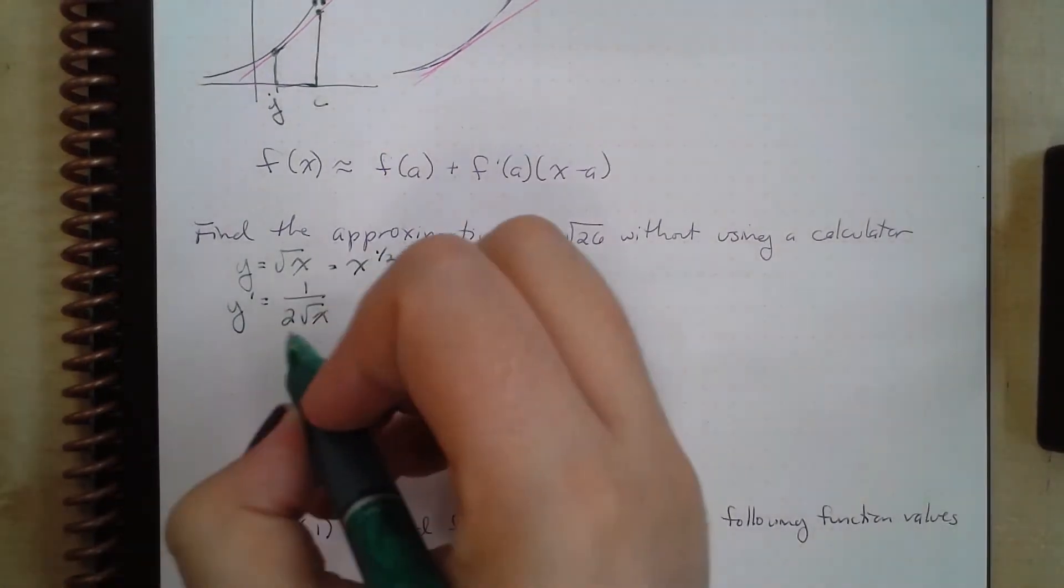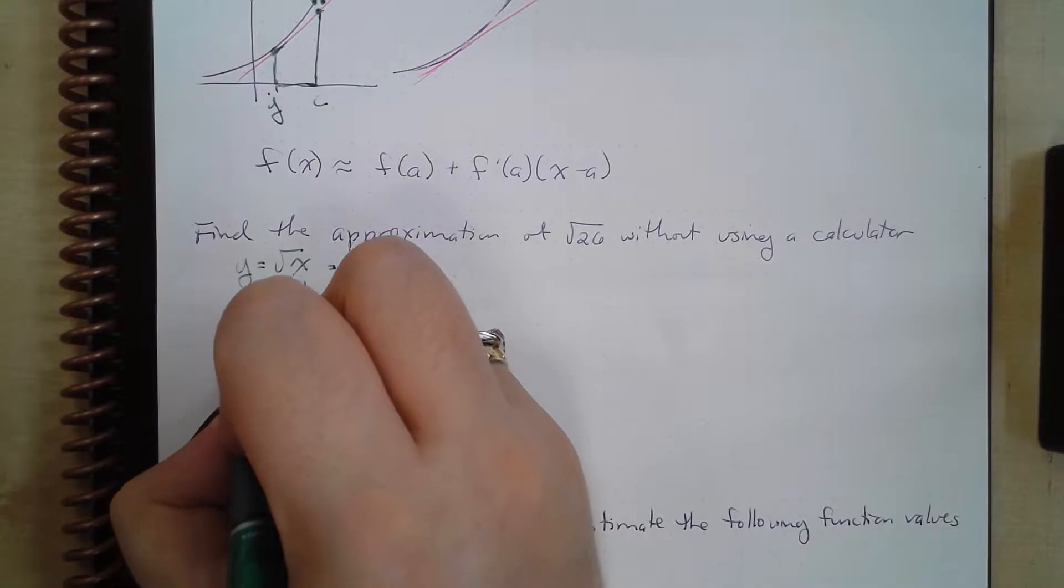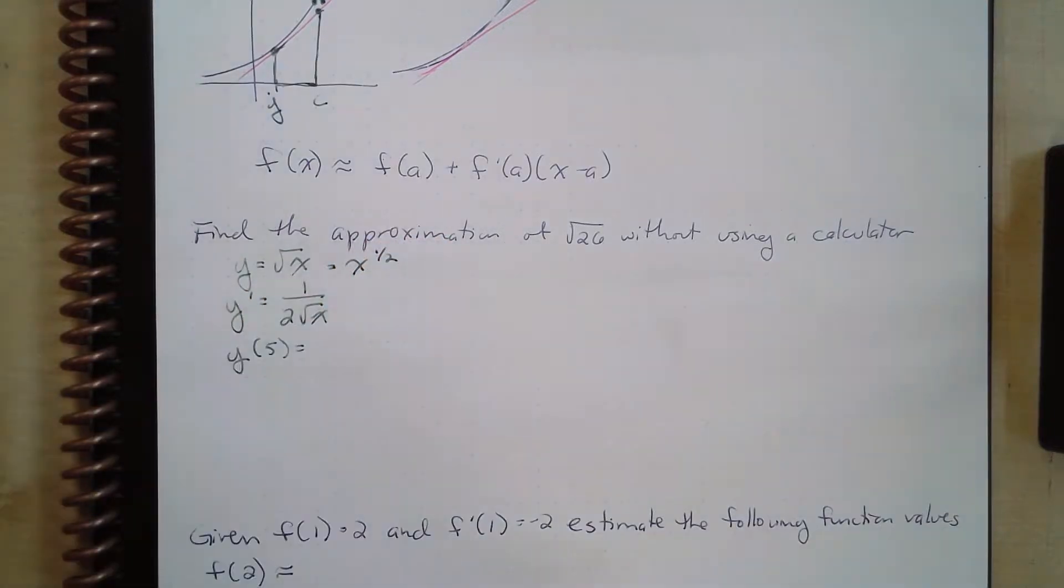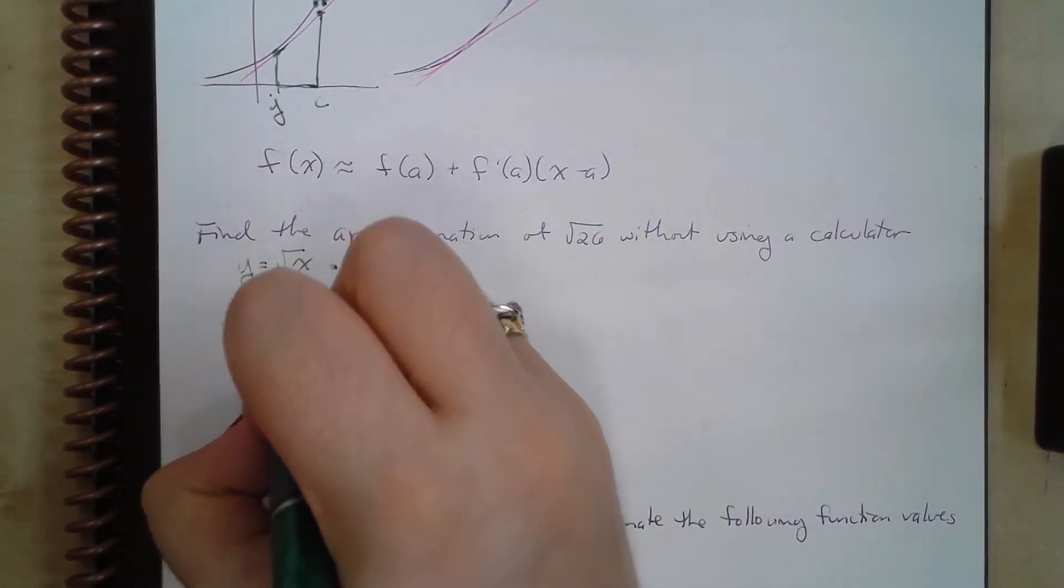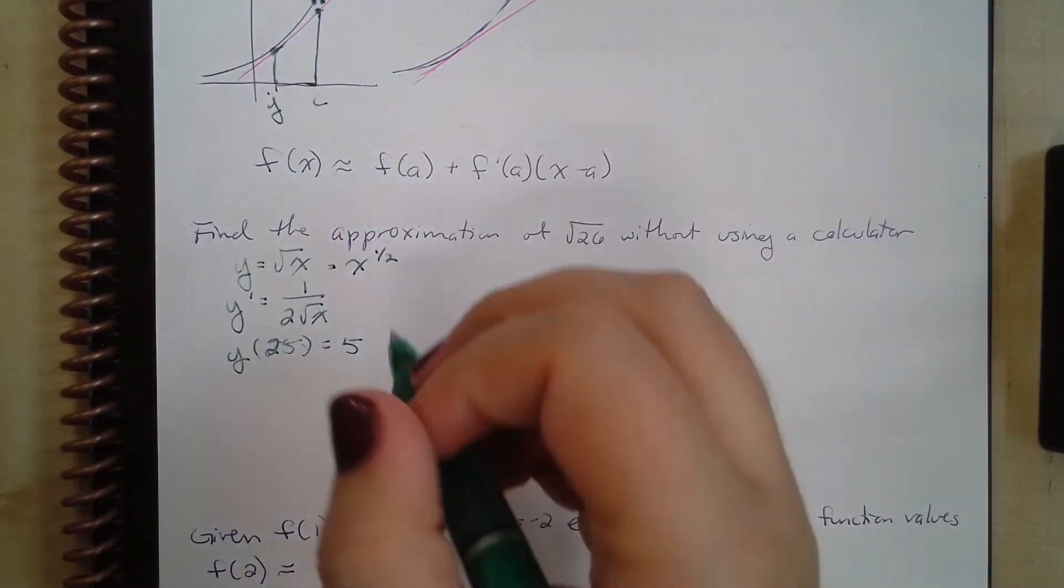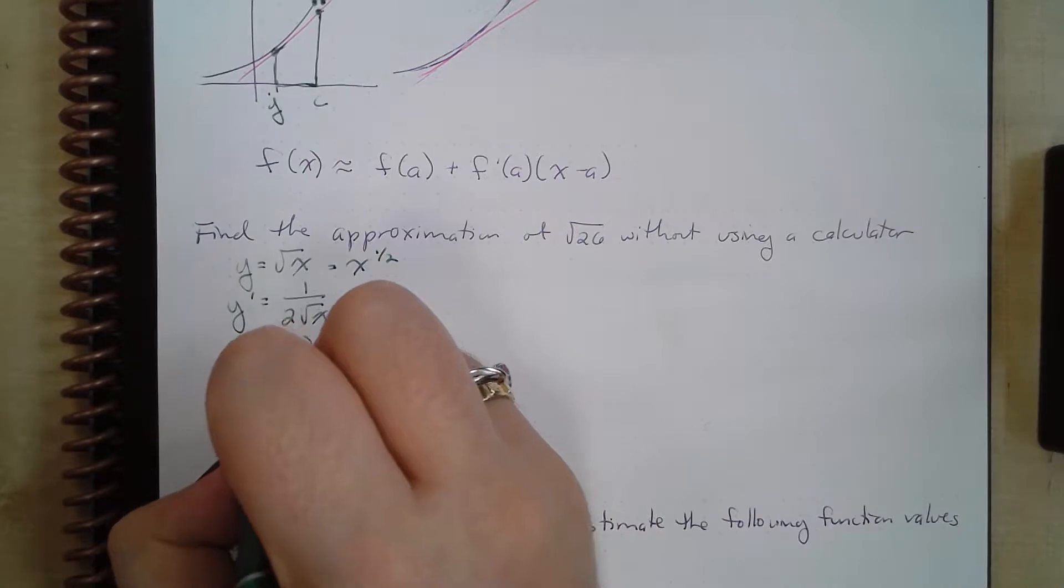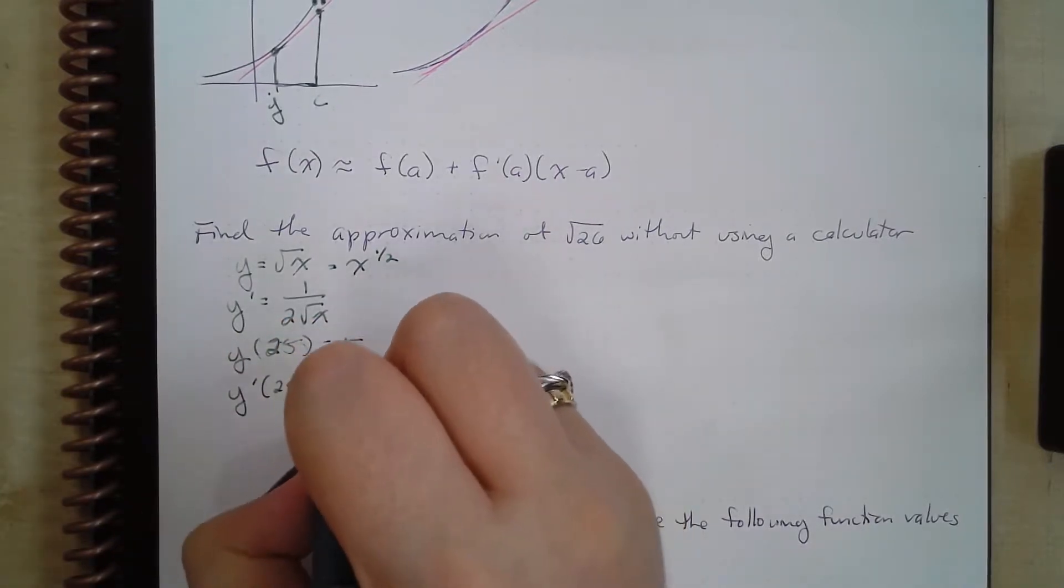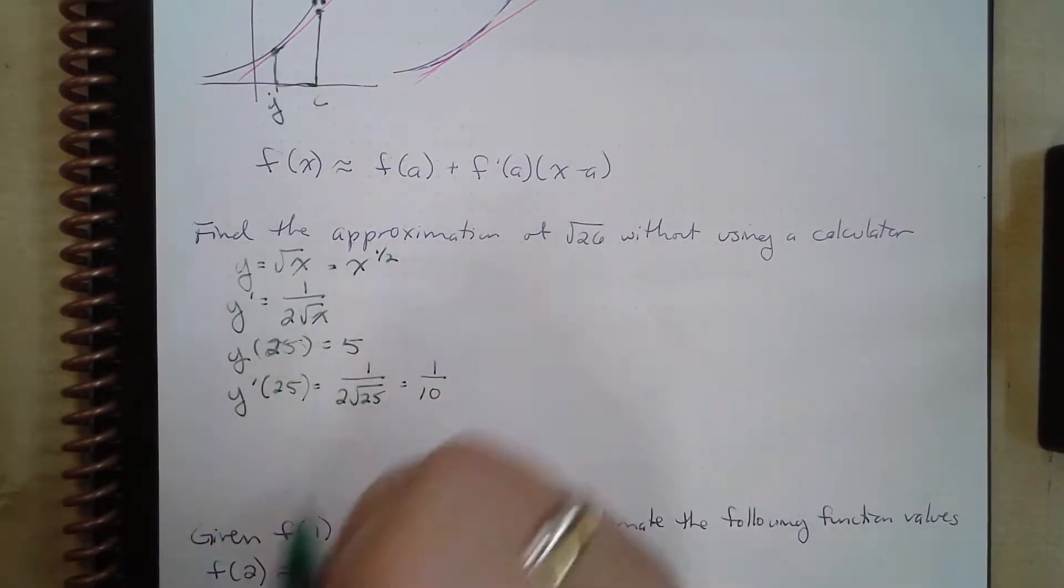So y of 25 is equal to 5, the square root of 25 is 5. And y prime of 25 is going to be equal to 1 over 2 times the square root of 25, which equals 1 over 10.